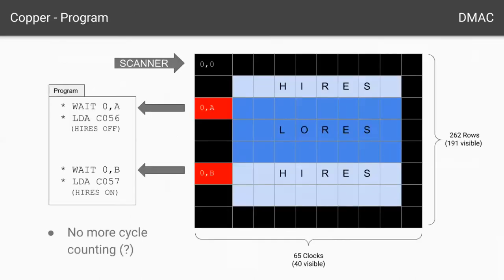Instead of a raster position, think of it as memory locations being retrieved by the scanner and sent to the shift register for display. The card is able to detect each cell as the memory is read, and it can detect the H-sync and V-sync signals. So with that information, let's say you wanted to implement a mixed high-res, low-res, high-res screen as shown here. What would be necessary is you would need to wait for a particular raster position, set a soft switch, wait for another raster position, and set another soft switch.